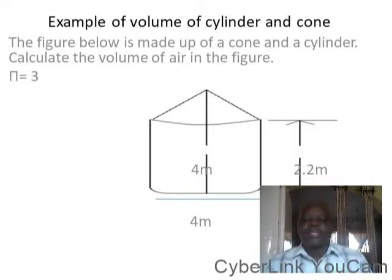Of course, you look at the base where you have 4 meters. That is to say the diameter of that cylinder is 4. Both the cylinder and the cone, they have equal diameter. Therefore the radius will now be 4 divided by 2, which equals 2.